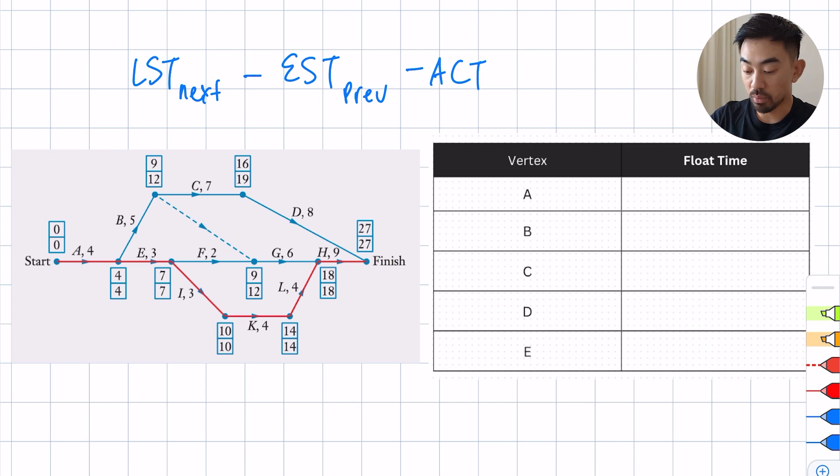For example, if I want to find the float time of A, I look at the next late start time which is 4, and I look at the previous start time of the early which is 0, and I minus the activity. So for A you're going to have 4 minus 0, the top box, minus 4. What's 4 minus 0 minus 4? Well that's 0. So the float time of A is 0, which makes sense because it's on the critical path.